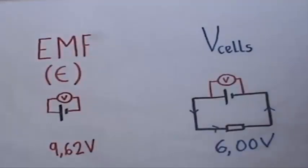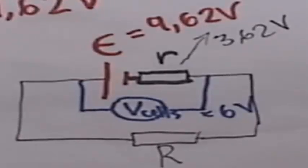EMF is more than V cells. In our case it was 9.62 volts whereas V cells was only 6 volts. And the difference between the two is because of battery internal resistance. It is the amount of voltage which the internal resistance of the battery takes.